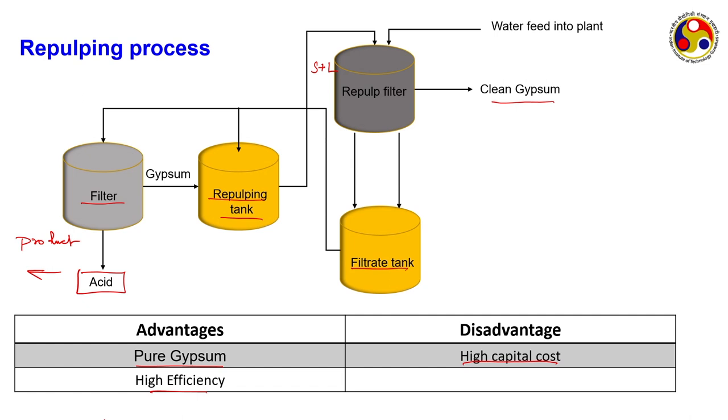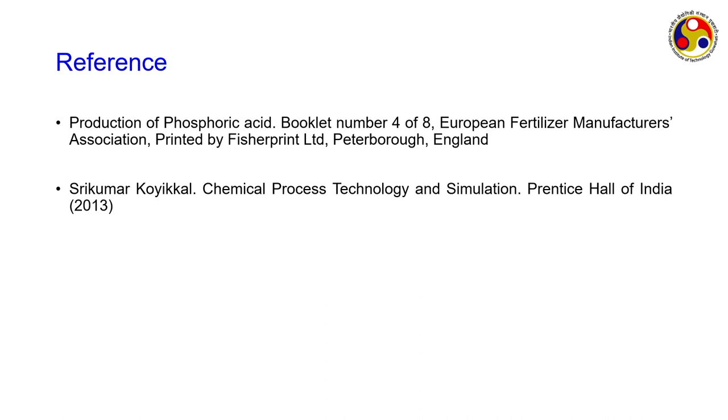To conclude this lecture: the phosphoric acid production processes have been covered. In the next lecture we will discuss the different pollution causes — the types of phosphate or sulphur gases coming out from the vent due to vacuum — and their abatement. I suggest consulting the European Fertilizer Manufacturer Association phosphoric acid booklet number 428, and the book by Srikumar Kokyal on chemical process technology simulation, where flow sheets can be simulated in Aspen to understand desired byproducts and vary operating conditions.